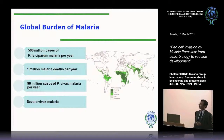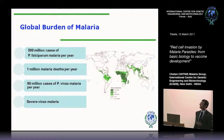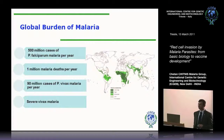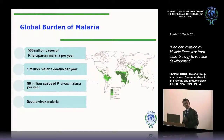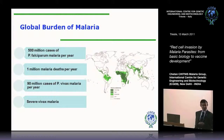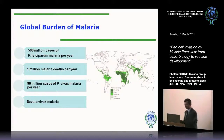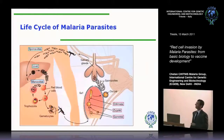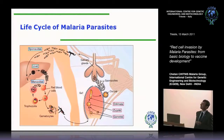A lot of the early research on malaria, a lot of the very important contributions, came from Italian researchers and names such as Bignami, Bastianelli, and even Golgi — the well-known cell biologist — who made very important contributions to understanding the malaria parasite life cycle, which is shown here in this slide.